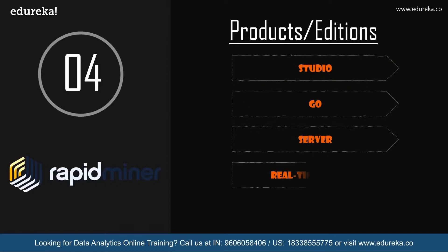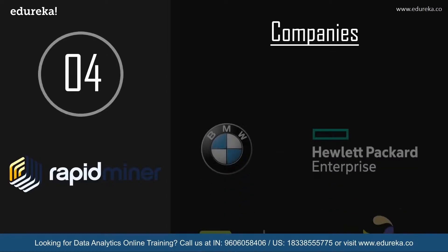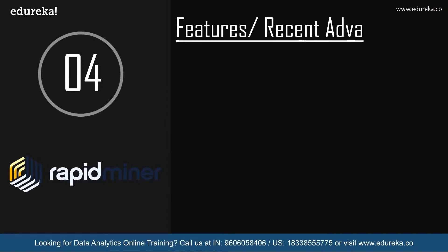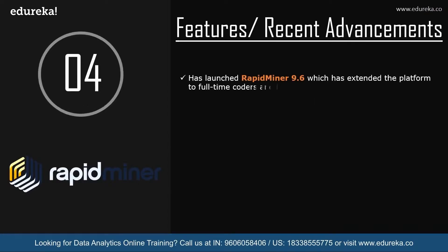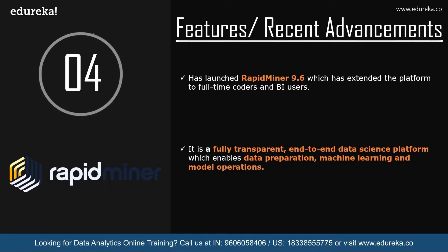RapidMiner comes with products such as Studio, Go, Server, Real-Time Scoring, and Radoop, and all these products have sub-versions which differ by features and pricing. Companies such as BMW, Hewlett Packard Enterprise, EZ Cater, and Sanofi use RapidMiner for data processing and machine learning models. Recently, RapidMiner launched version 9.6, which extends the platform to full-time coders and BI users as well, making it a fully transparent end-to-end data science platform enabling data preparation, machine learning, and model operations.